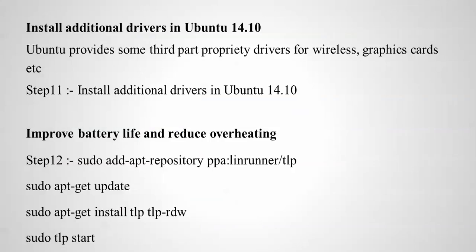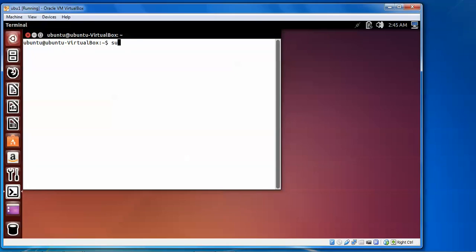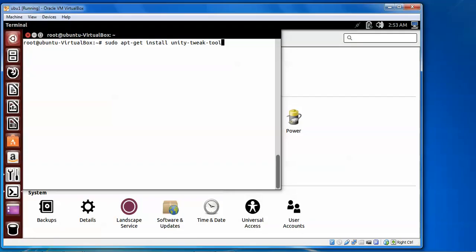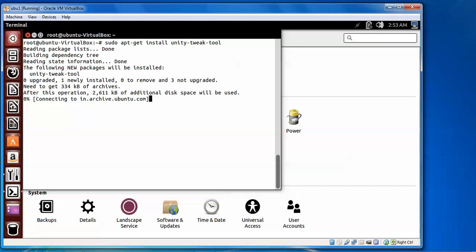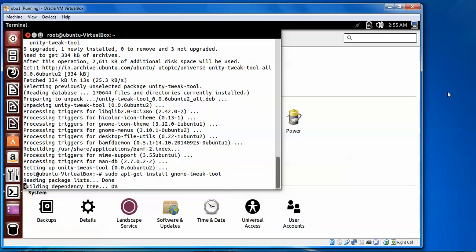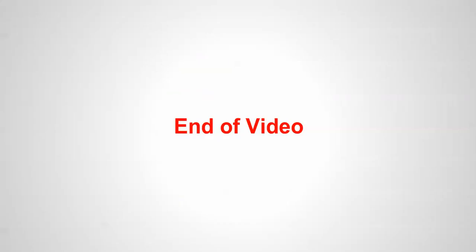To improve battery performance and reduce overheating, run the command to add the TLP PPA repository, then update and install TLP. Log in as root and type the command, then press Enter to install TLP. You can also install GNOME to replace Unity as your desktop environment. These are the tips for Ubuntu 14.04. I have shown you the update and configuration steps — please subscribe. Thank you for watching.